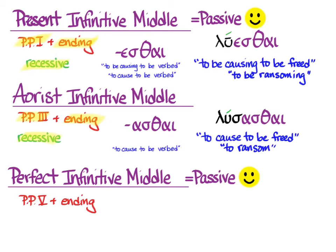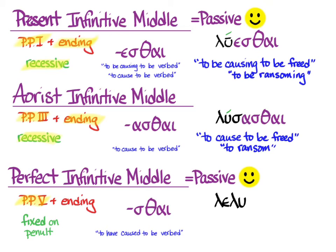Finally, the perfect infinitive middle comes from the fifth principal part, as does everything perfect and middle. The ending is simply -sthai. The accent is fixed on the penult, and the default translation for the middle is 'to have caused to be verbed.' To make the perfect infinitive middle of luō, we go to the fifth principal part, take off the ending to get the stem lelū-, add -sthai, and place the accent on the second-to-last syllable. We get lelūsthai, meaning 'to have caused to be freed,' or better for luō, 'to have ransomed.'